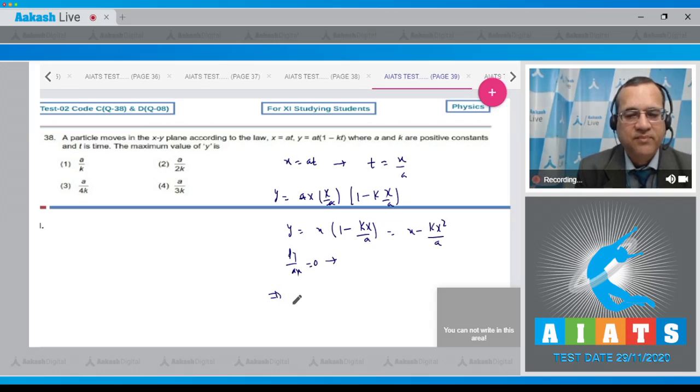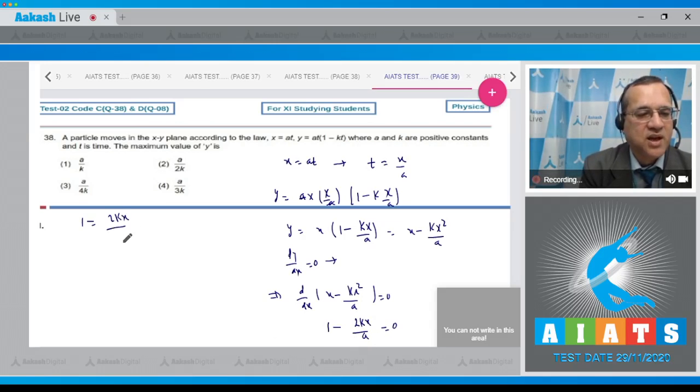Therefore, d dx of x minus k x square by a is equal to 0. 1 minus 2 k x divided by a is equal to 0. So 1 is equal to 2 k x divided by a. Therefore, x is equal to a divided by 2 k.